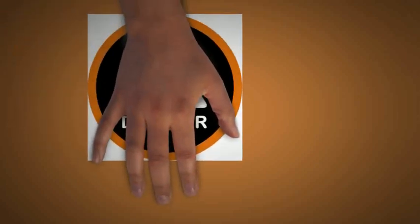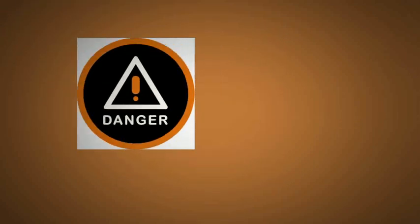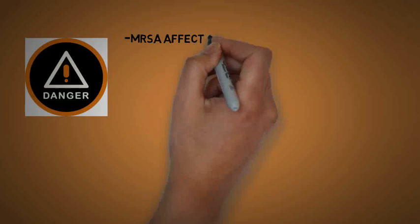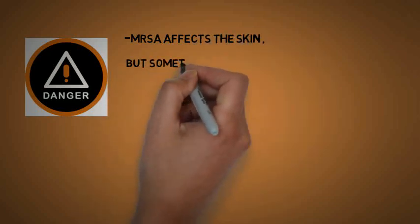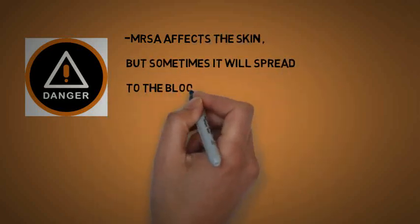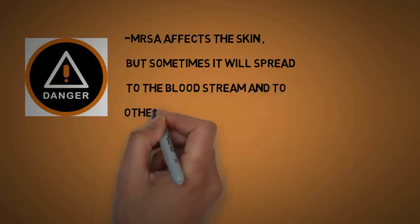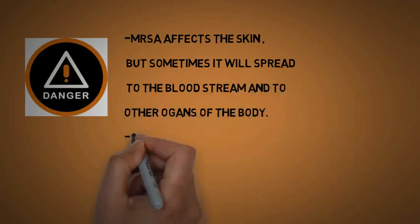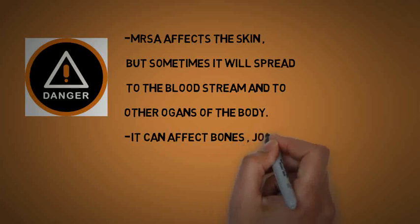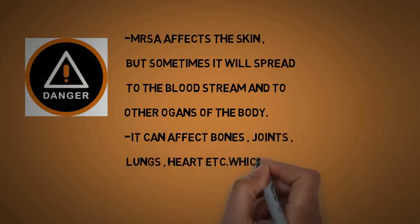MRSA infections usually affect the skin, but sometimes spread to the bloodstream and other organs of the body. It can affect bones, joints, lungs, and heart, which are life-threatening cases.